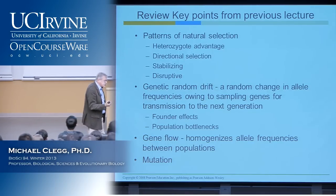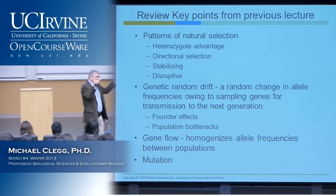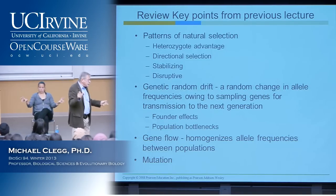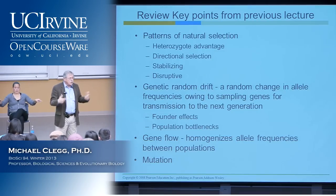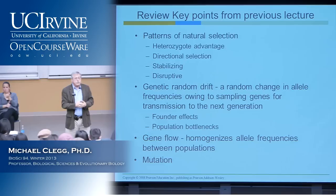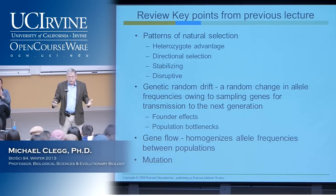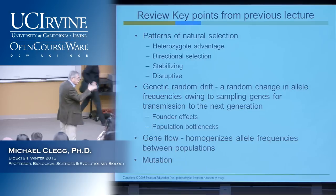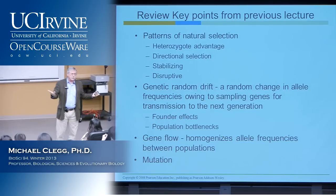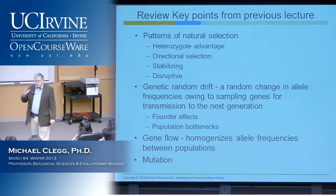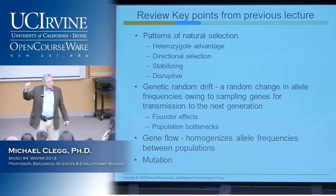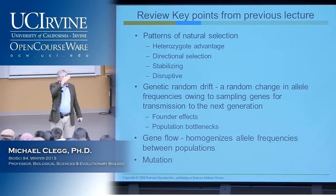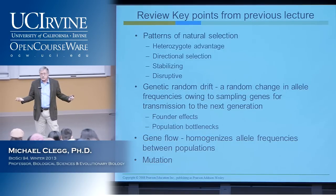Another example was stabilizing selection, where the two tails of the distribution are removed because being at an extreme is a disadvantage. We used an interesting example from your textbook: human birth weight. The highest level of survival for human infants, based on a study done in England, is at about seven and a half pounds. Babies of much higher birth weight have higher mortality, as do babies of lower birth weight. That's an example of stabilizing selection.